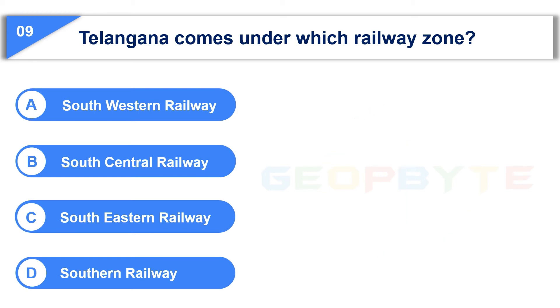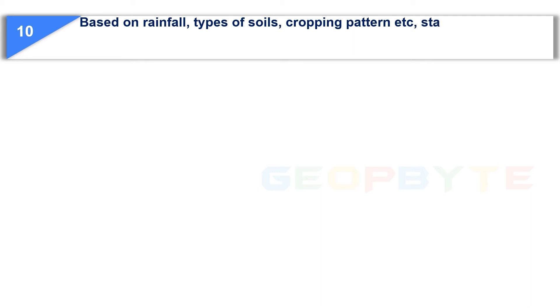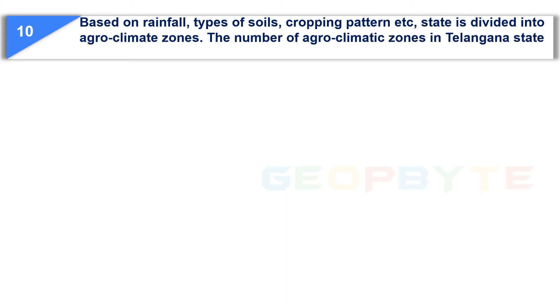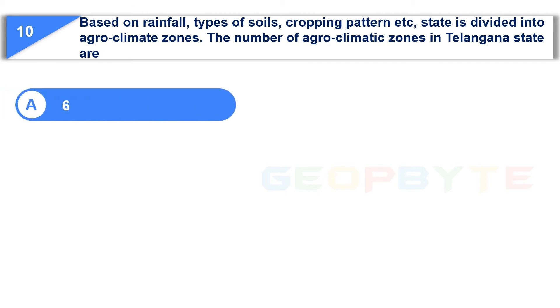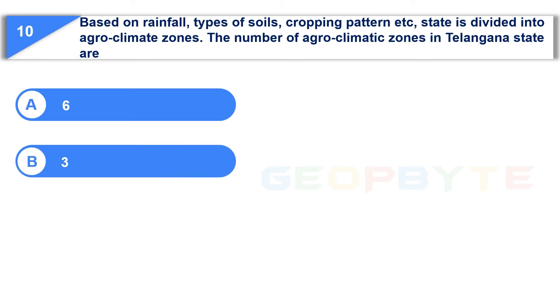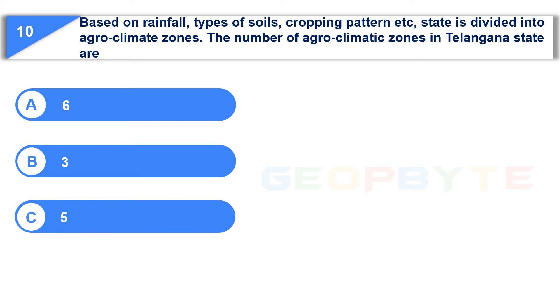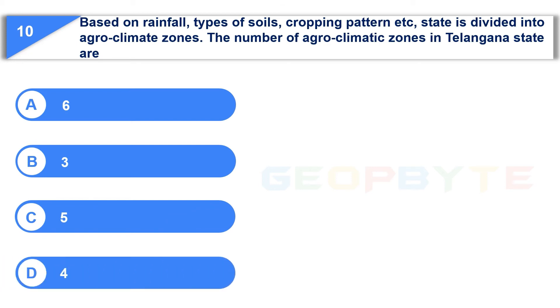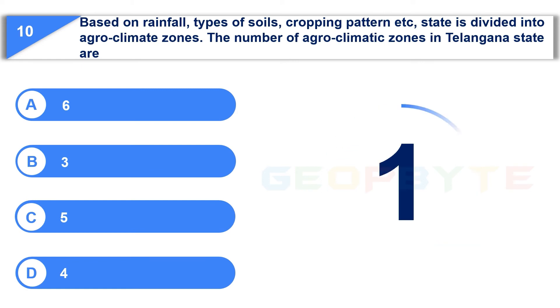Your time is up and the correct answer is Option B: South Central Railway. The tenth question is: Based on rainfall, types of soils, cropping pattern, etc., the state is divided into agro climatic zones. The number of agro climatic zones in Telangana state are — Option A: 6, Option B: 3, Option C: 5, Option D: 4. Your time starts now. The correct answer is Option B: 3.